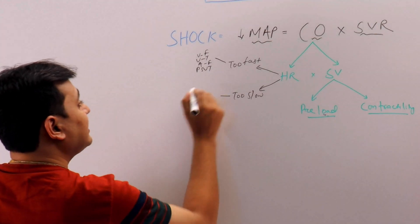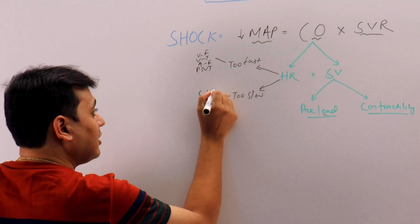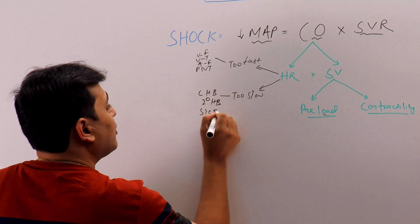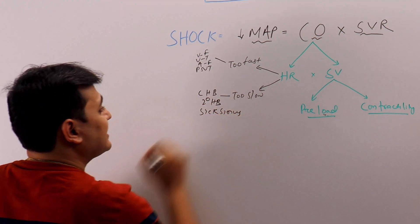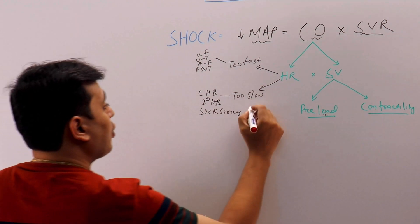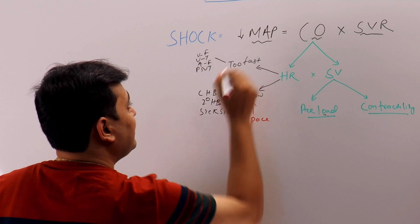Too slow - what can be the differential diagnosis here? Complete heart block, second degree heart block, sick sinus syndrome, etc. But treatment here remains electricity. So if it is too slow we have to pace the patient; if it is too fast we have to shock the patient.